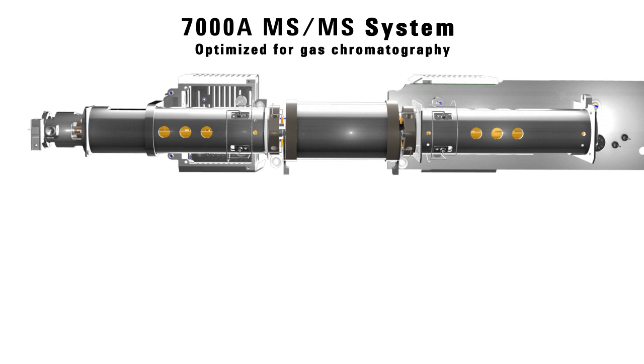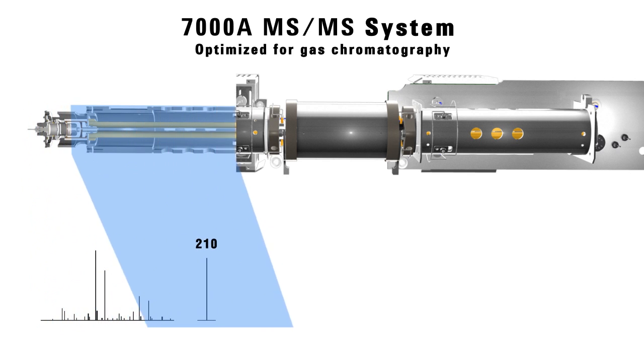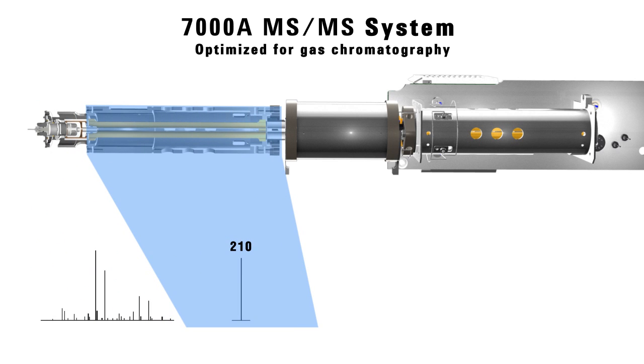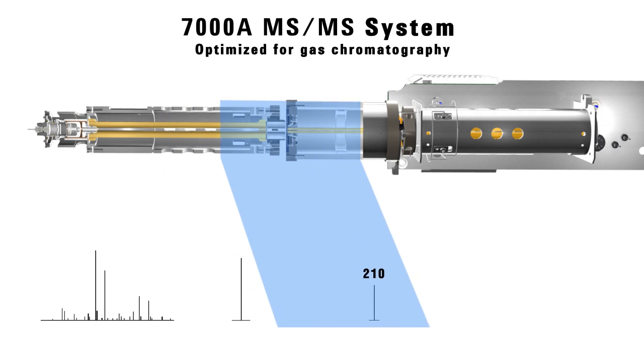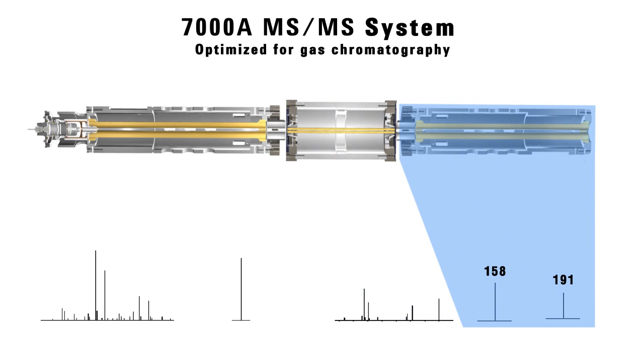The 7000A MS-MS, an MS-MS system optimized for gas chromatography. From the classical distribution of ions produced in the inert, high-performance source, to the precise isolation of the precursor ion through the path of the hot quartz hyperbolic quadrupole, into the high-pressure hexapole collision cell for efficient precursor dissociation, product ion transmission and simultaneous reduction of metastables with helium quenching, to the final accurate mass analysis in a second hyperbolic quadrupole field before ion collection at the triple axis detector.